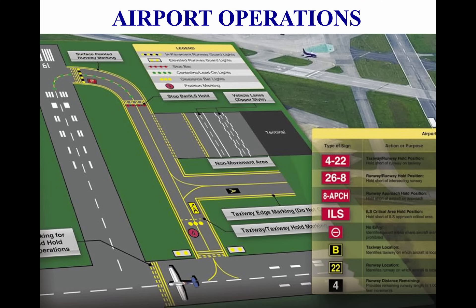Tutorial 13: Airport Operations. This tutorial covers airport operations. Each time a pilot operates an aircraft, the flight normally begins and ends at an airport. An airport may be a small sod field or a large complex utilized by air carriers. This chapter examines airport operations, identifies features of an airport complex, and provides information on operating on or in the vicinity of an airport.